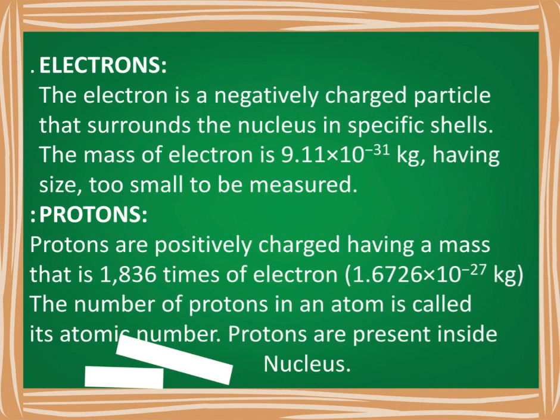What is an electron? An electron is a negatively charged particle having a very minute mass of 9.11 × 10⁻³¹ kg. These electrons are found inside the atom surrounding the nucleus in specific orbits or shells.